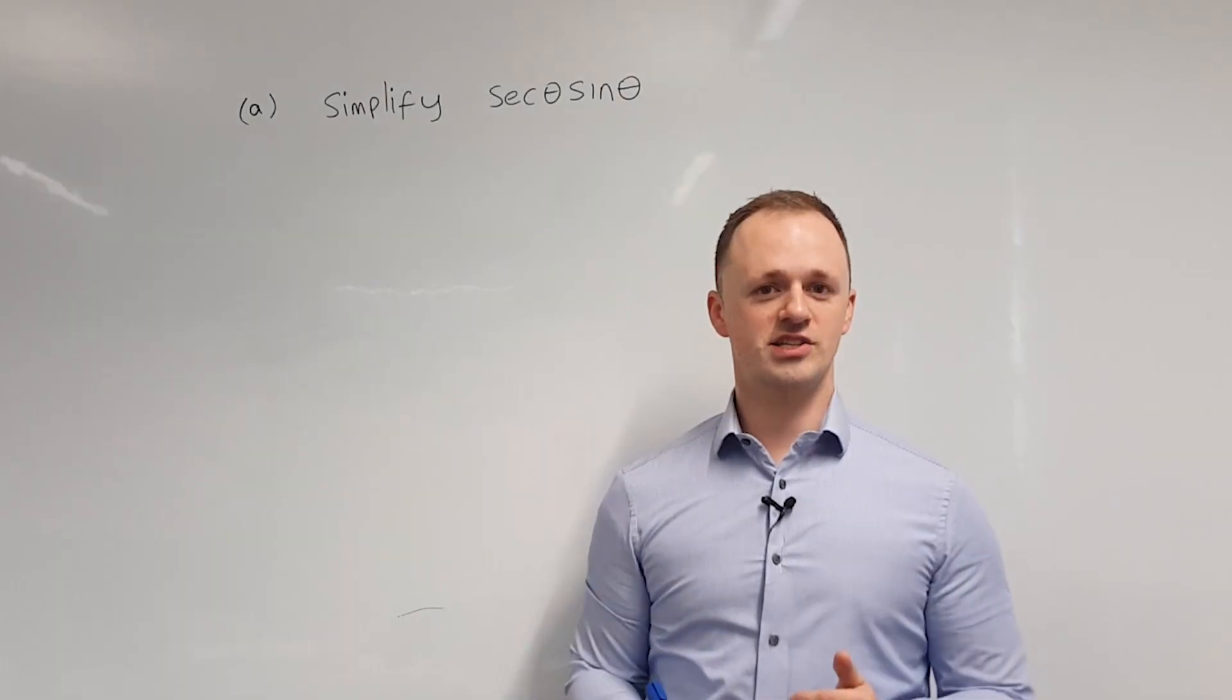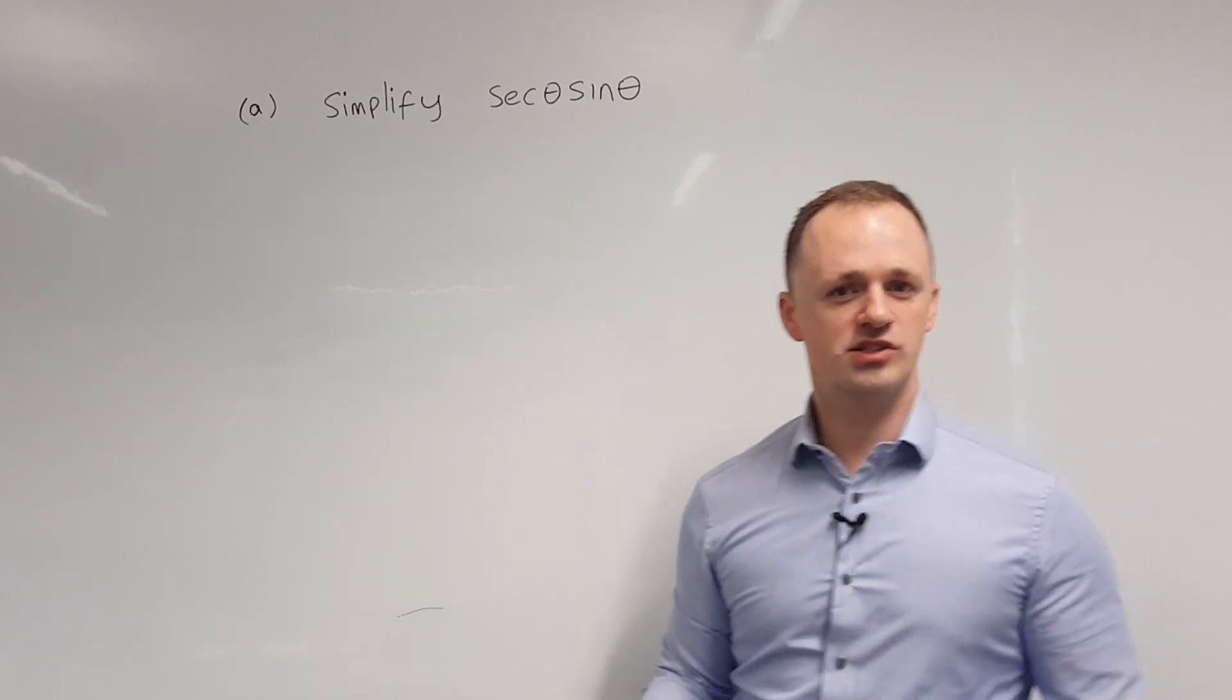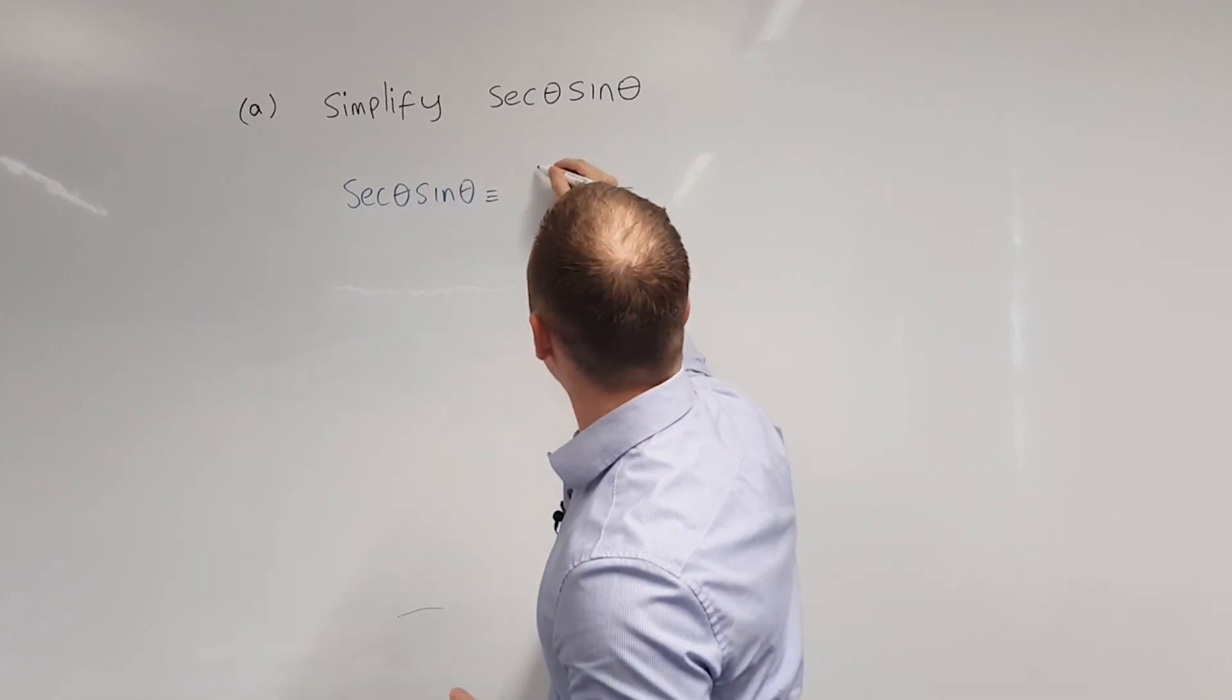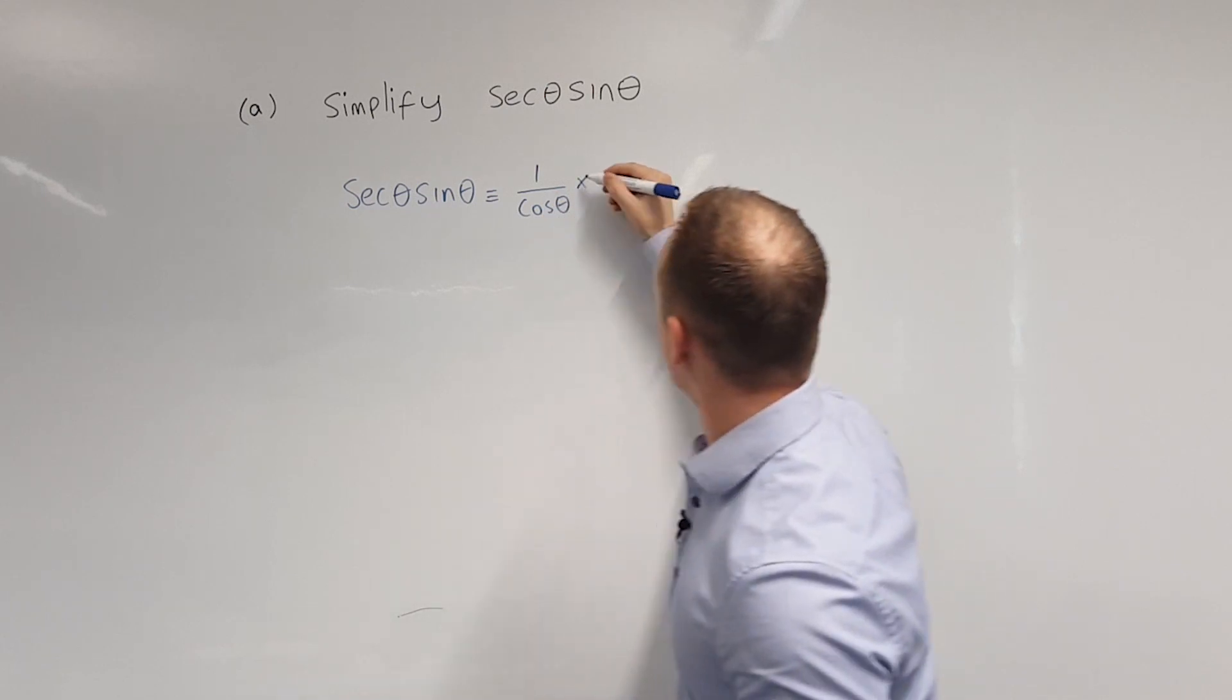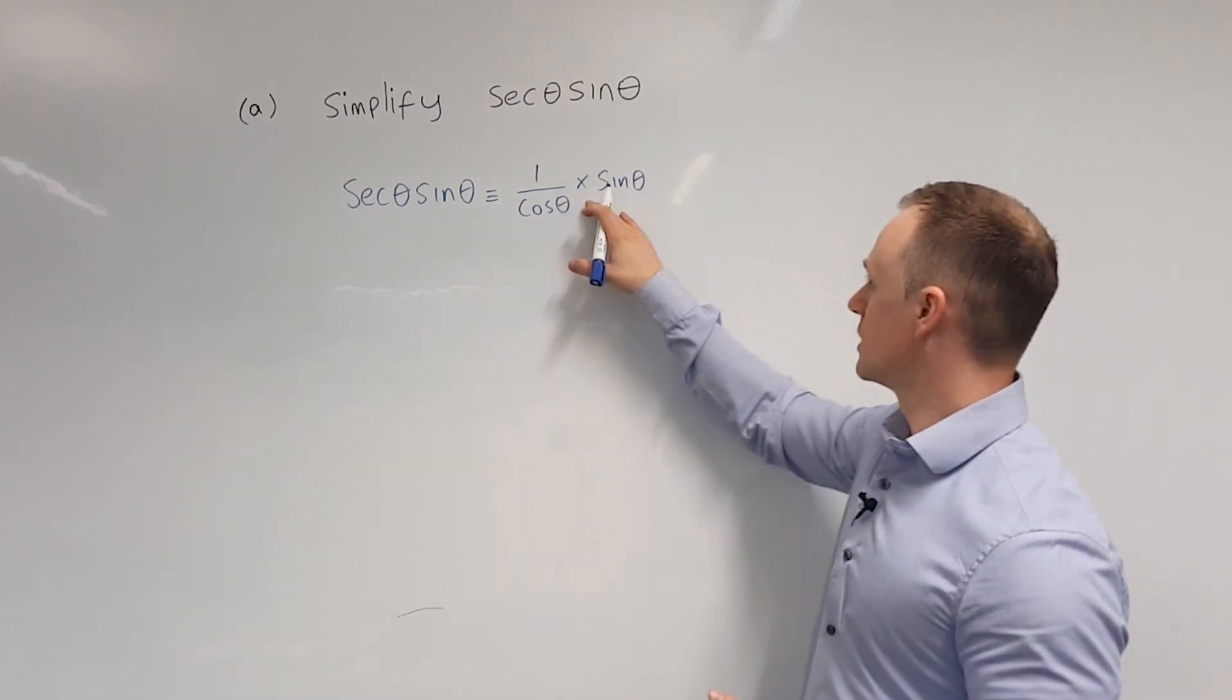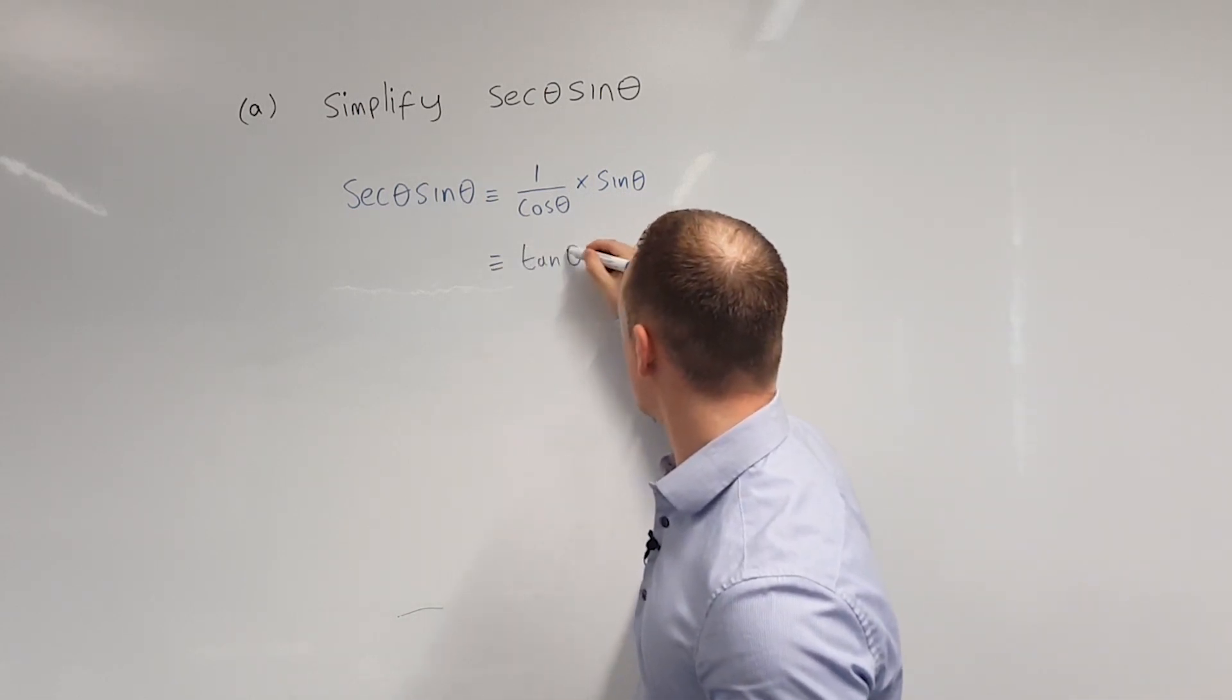To simplify sec theta sin theta we'll start by writing sec theta in terms of cos theta. So we can write it as 1 over cos theta multiplied by sin theta. So here we have sin theta divided by cos theta which we can then write as tan theta.